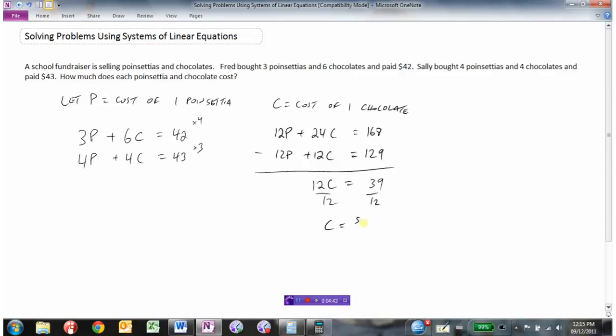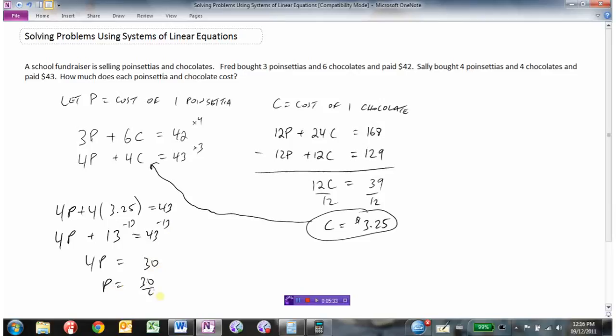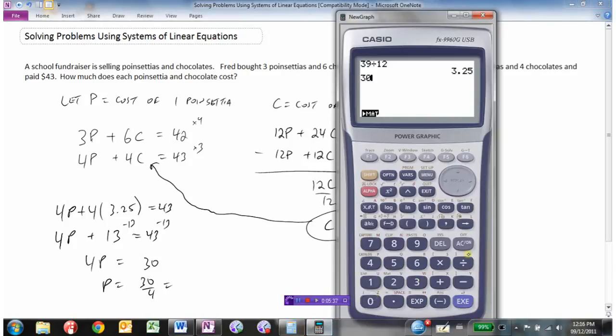So we've just figured out C, which was $3.25. C was the cost of one chocolate, so now we just need the cost of the poinsettia. I'm going to substitute C back in, so 4P plus 4 times $3.25 equals 43, which gives 4P plus $13 equals 43. Isolating P by subtracting 13 gives $30 divided by 4.